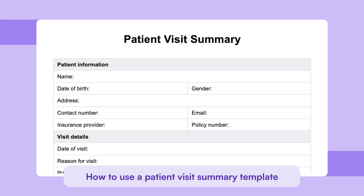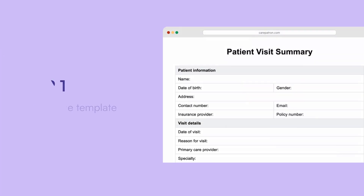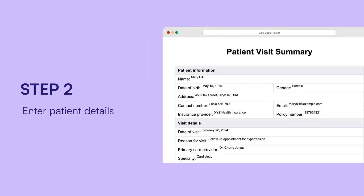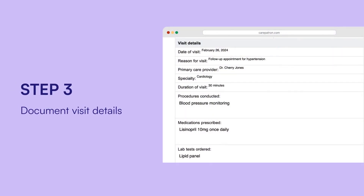Here's how to use the patient summary template — and these steps apply to the treatment summary as well. First, download the template; you can easily access and download it from our website. Then enter patient details, filling in their name, contact information and other essential details to ensure accuracy. Next, document visit details by recording the date of the visit, the reason for it and any procedures or tests done.